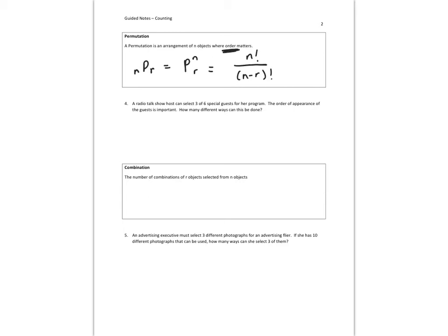Order matters. Number four, a radio talk show host can select three of six special guests for her program. The order of appearance of the guests is important, so it matters. How many different ways can this be done? So you've got six, choose three. Six, permutation three. And that will be six factorial over six minus three factorial.